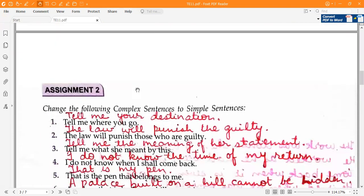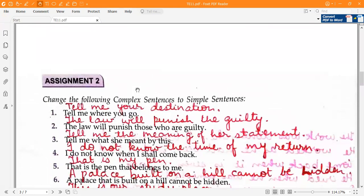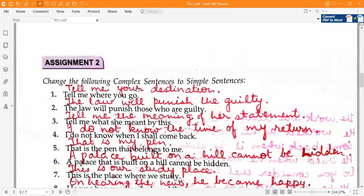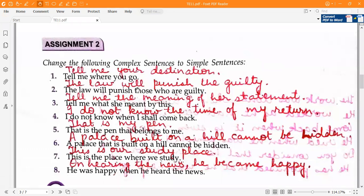Moving ahead to the next assignment, that is assignment 2. This assignment is on page 8. Change the following complex sentences to simple sentences. Tell me where you go. Tell me your destination. The law will punish those who are guilty. The law will punish the guilty.